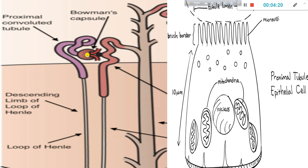The nephron consists of the Malpighian corpuscle, the regular renal tubule, the proximal convoluted tubule, the loop of Henle, the distal convoluted tubule, and the collecting tubule. This is the Malpighian corpuscle, and this is the loop of Henle.